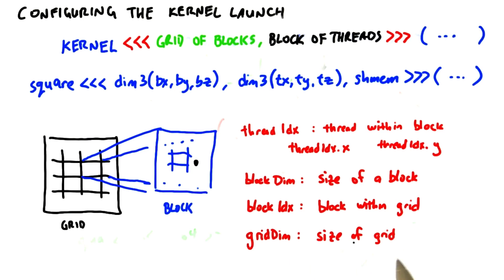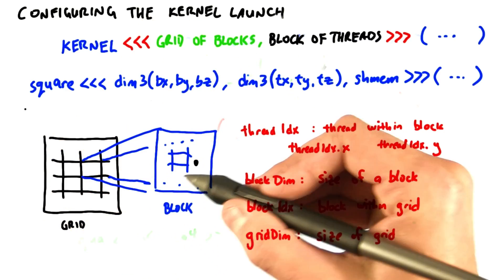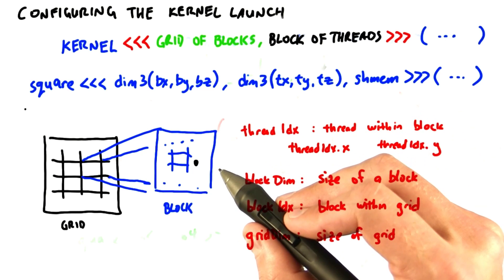And gridDim will tell us the size of the grid, how many blocks there are in the x dimension, the y dimension, and the z dimension.